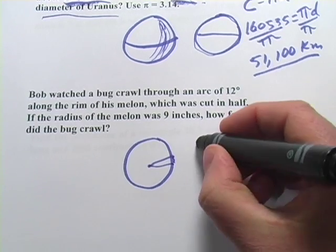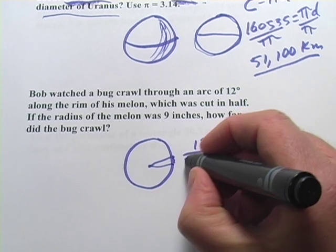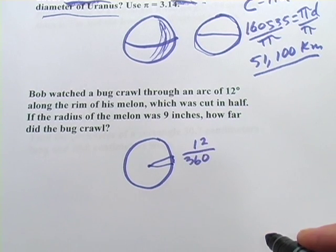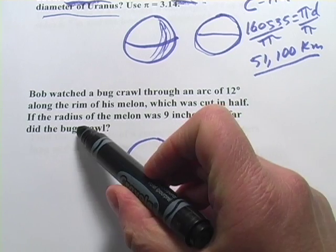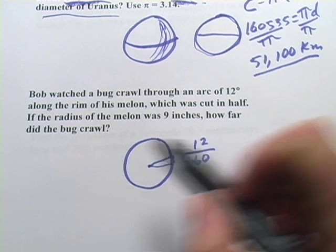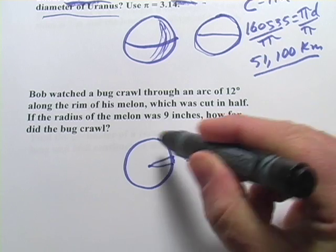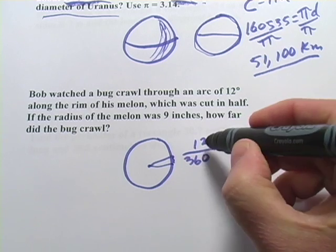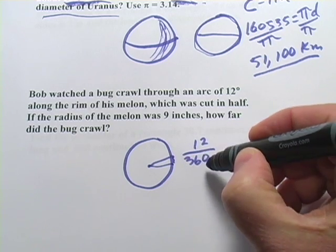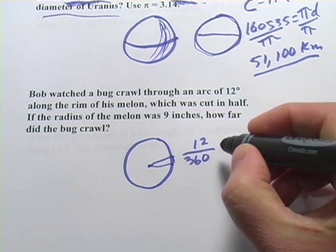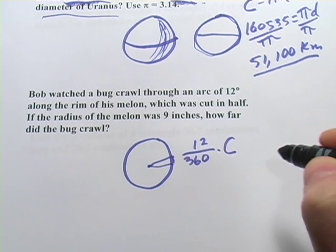So we know that the bug crawled 12 out of 360 degrees of that circle. It says, if the radius of the melon was 9 inches, how far did the bug crawl? To find out that distance in inches, we're going to take this ratio here of the portion of the whole circle and multiply it by the circumference of the whole circle.